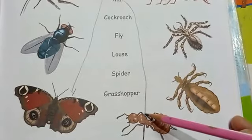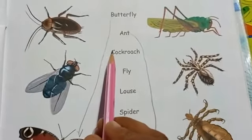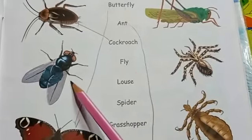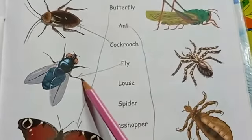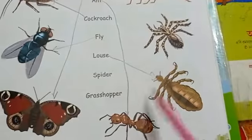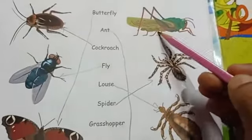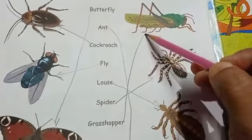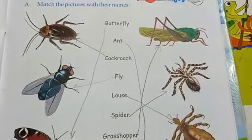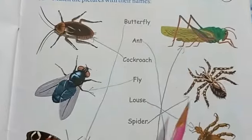This is an ant. Next, cockroach — these are cockroaches. And this one is the grasshopper. You will match these with their names in your book.